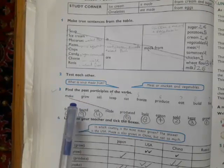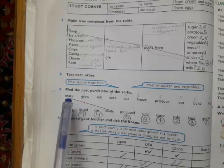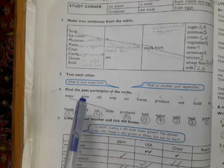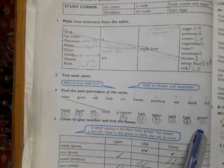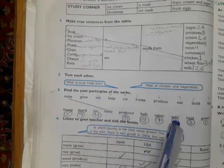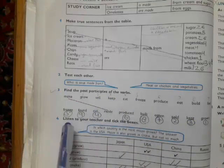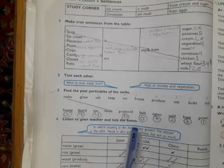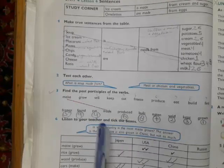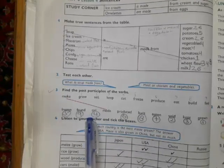Come to the middle of page 24. Here the third question is find the past participles of the verbs. The verbs are given, you have to match them with their related past participles. Like make goes with made, grow goes with grown. I have numbered them. Sell goes with sold, keep kept, cut cut, freeze frozen, produce produced, eat eaten, build built, and find goes with found. The lesson is done. Thank you so much.